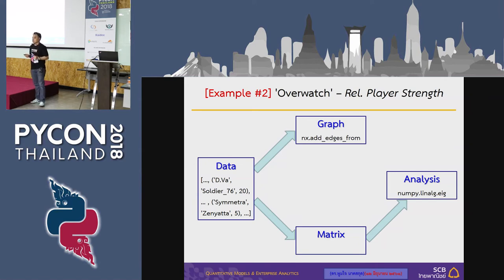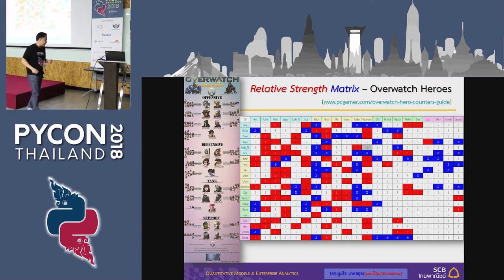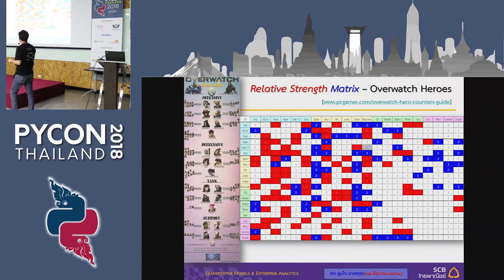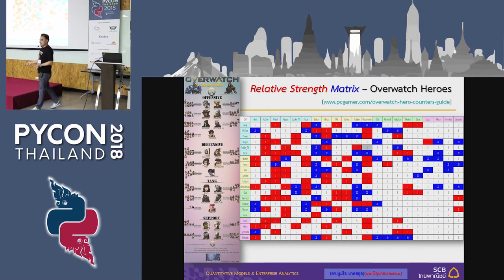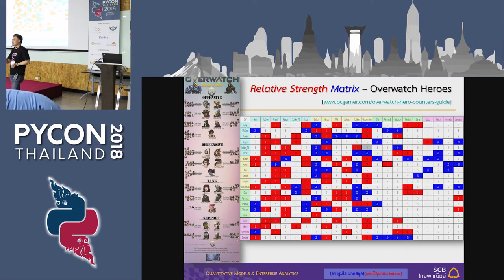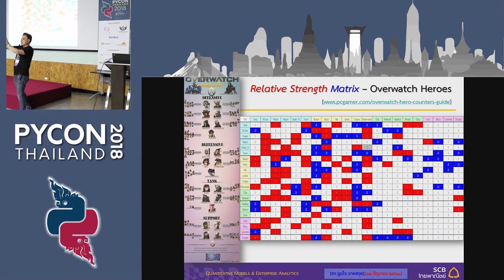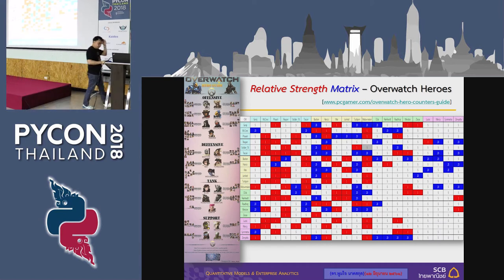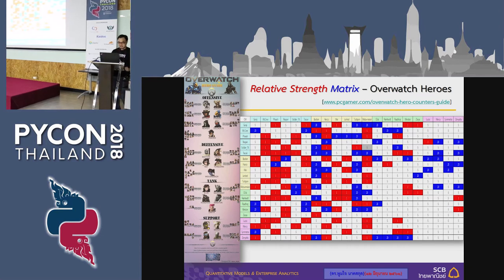Does anyone play Overwatch? Believe it or not, there is on the internet an Overwatch character strength chart — who beats whom — encoded as a graph. Unlike adjacency, it is a directed graph, meaning it is not symmetric. One character beats another in combat; that's a directed edge.